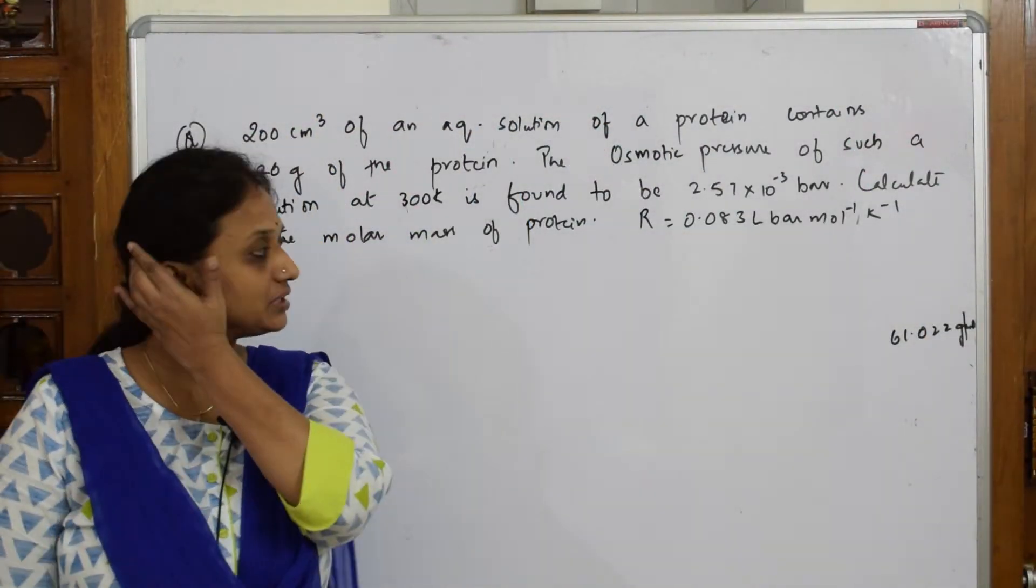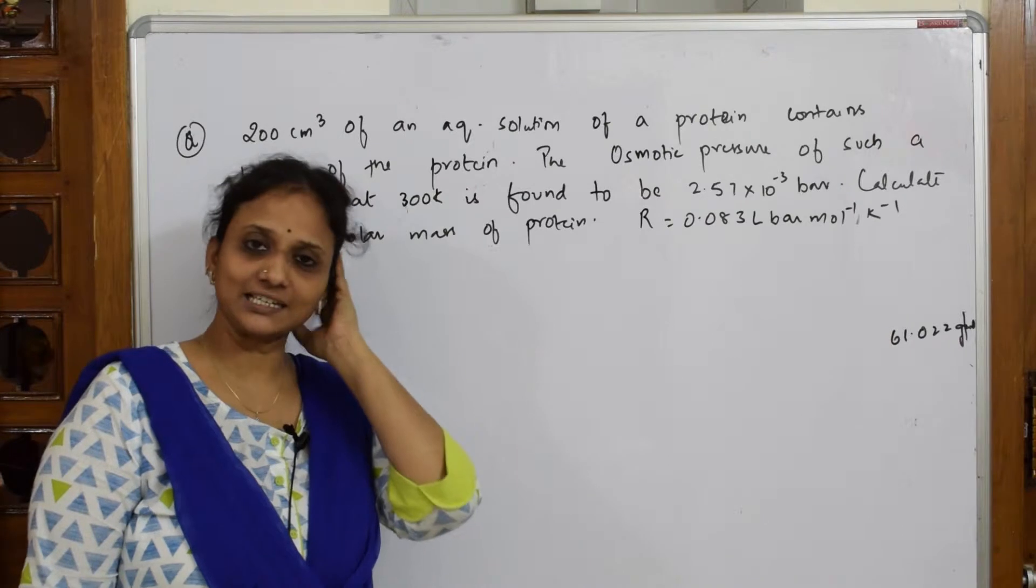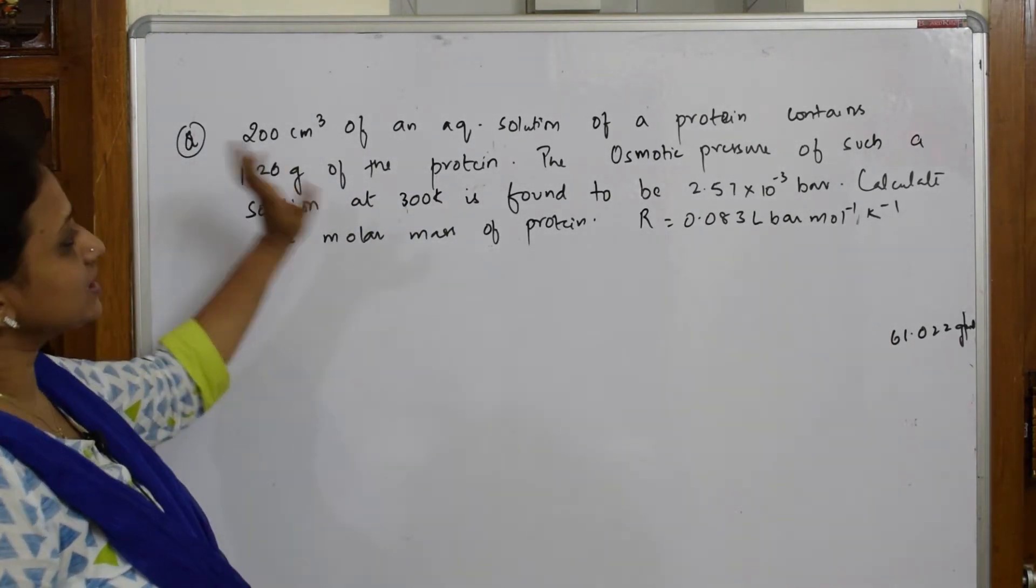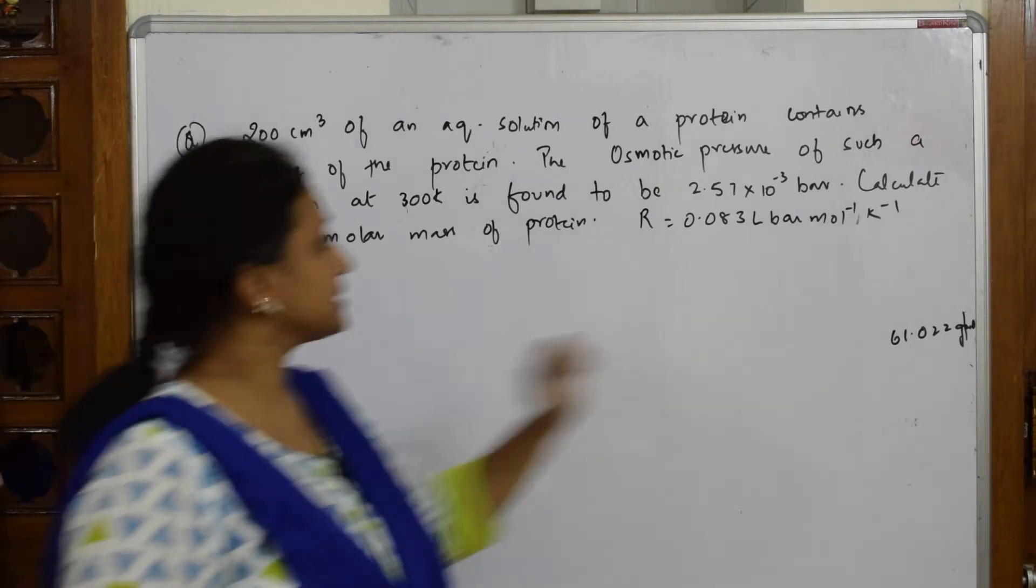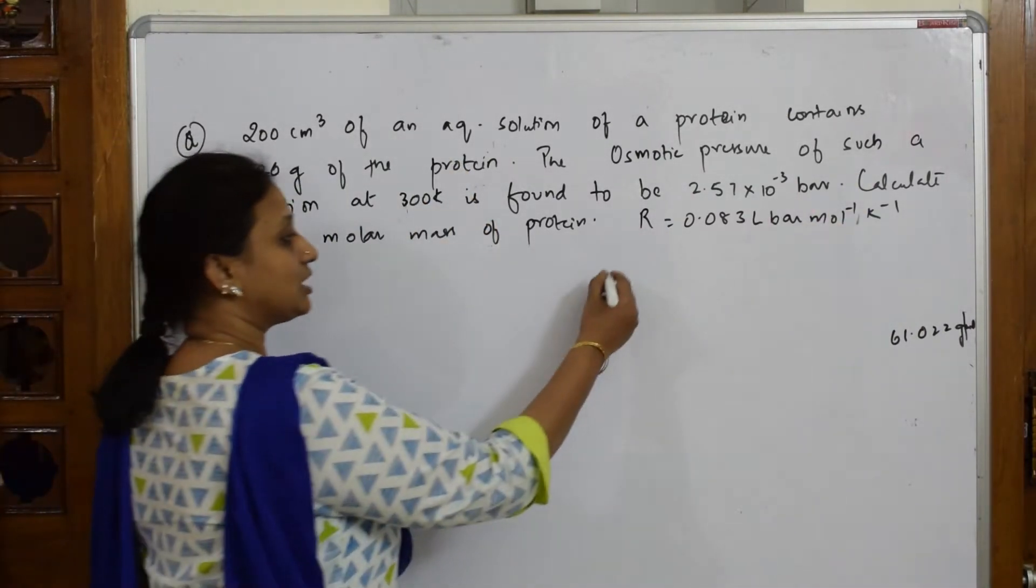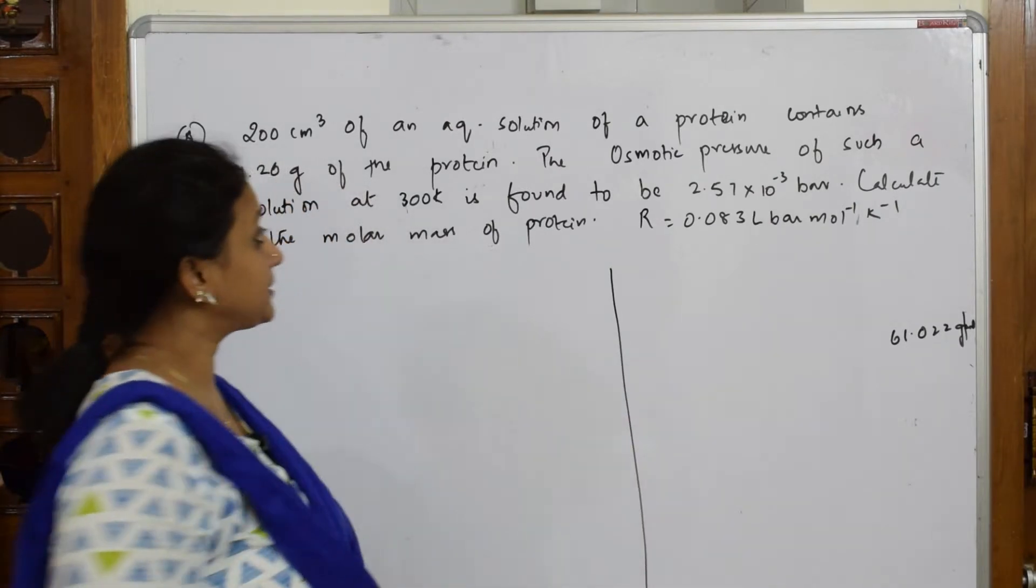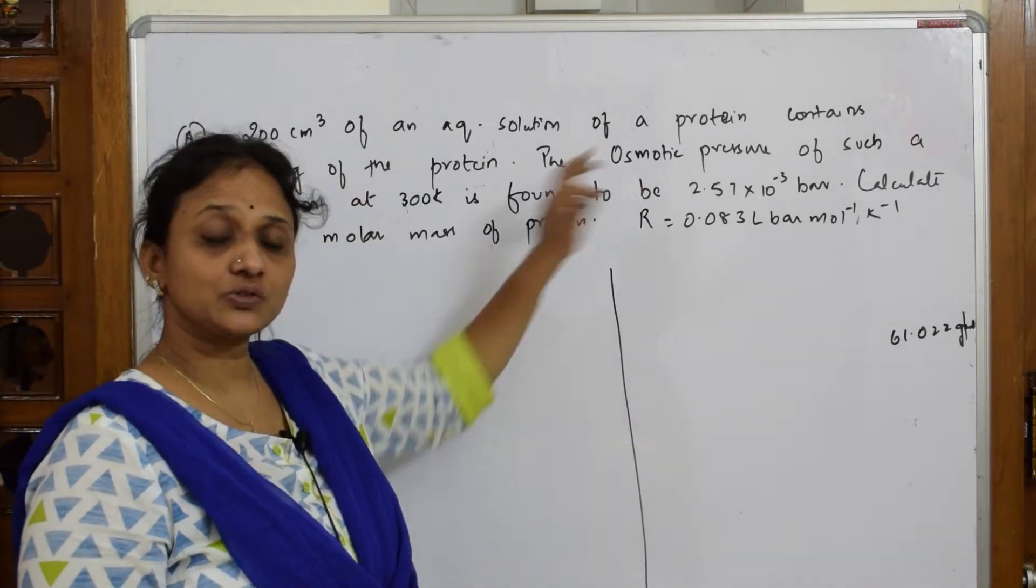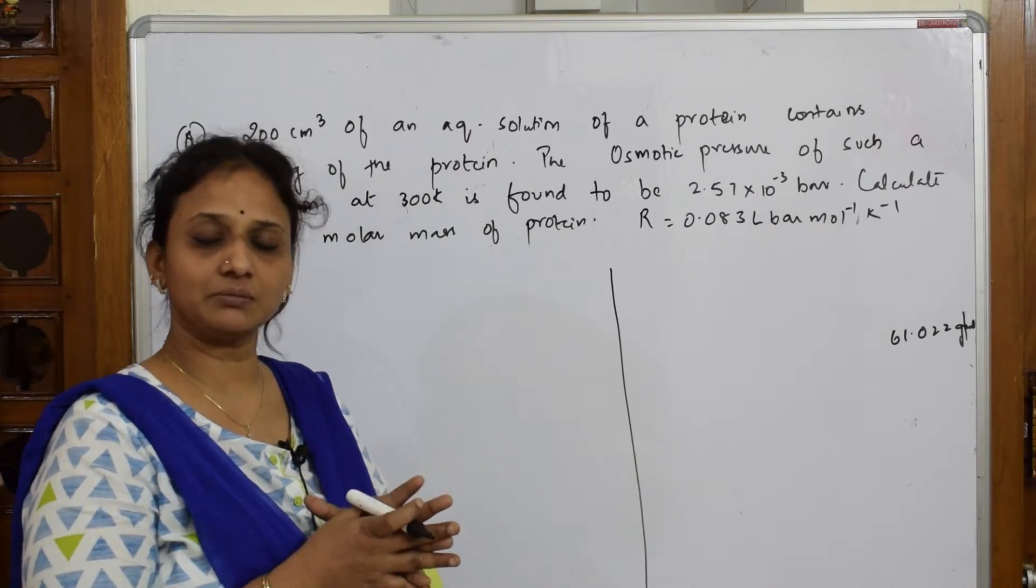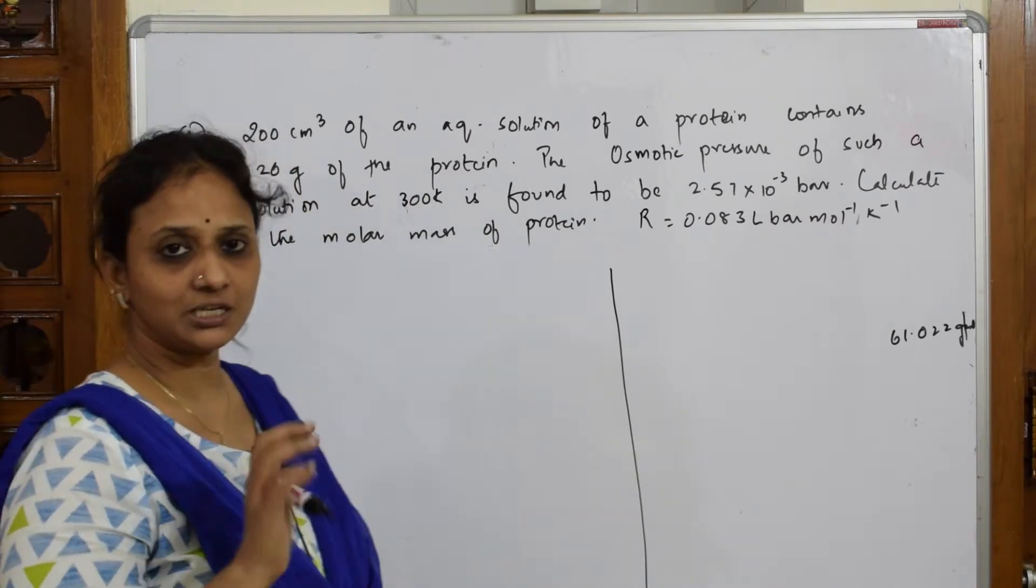Let us come back and do this osmotic pressure numerical. First of all, let's see what should I calculate - calculate molar mass of the protein. I have to calculate molar mass from what data they have given. Osmotic pressure, so I have to use the formula where I can calculate molecular mass using pi, the pi relation.